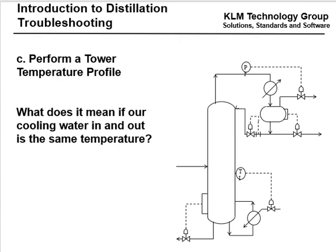What does it mean if your cooling water in and out temperature is the same? It could mean your overhead condenser is fouled. If it's clean service, it may mean you don't have the right amount of flow through the overhead condenser. If you have low pressure and the cooling water temperatures in and out are similar, check the reflux flow meter and reflux control valve to determine if you have the right amount of reflux going into the column.